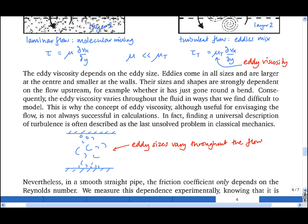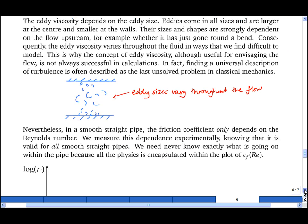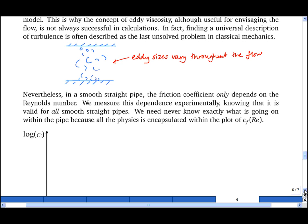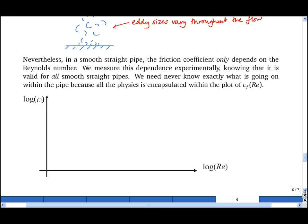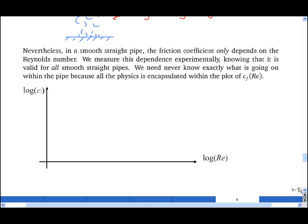Nevertheless, in a smooth straight pipe, the turbulence will behave in the same way again and again, and that means that the friction coefficient will only depend on the Reynolds number. If we measure this dependence experimentally, then we have a plot that is valid for all smooth straight pipes.